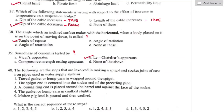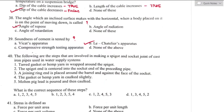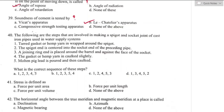Question number forty: the correct sequence of steps for making a spigot and socket joint of a cast iron pipe used in water supply system. The correct sequence is option C — 1, 2, 4, 5, 3.